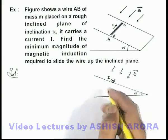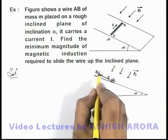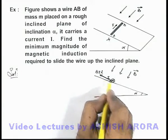By right hand palm rule, we can see that the wire will experience a magnetic force BIL in the direction up the inclined plane.